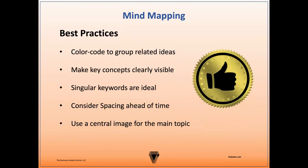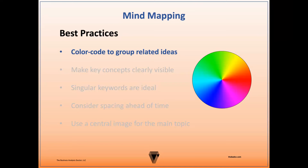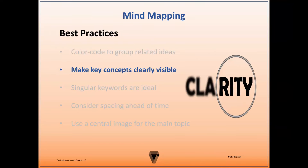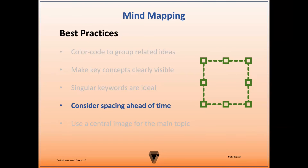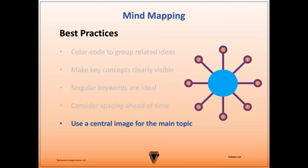Now let's look at the best practices of mind mapping. Color code the mind map to group related ideas. It's common for each topic that stems from the main topic to have a specific color, which will be assigned to all the subtopics and keywords derived from that topic. Make key concepts clearly visible — print all words clearly and use images that clearly represent the topics. Singular keywords are ideal; if a single keyword isn't practical, keep text short within your mind map. Also, put only one topic or subtopic on each branch or node. Consider spacing ahead of time — have enough space to extend your mind map and leave space for unexpected topics. Use a central image for the main topic; if an image isn't practical, the text for the main topic should be much larger than any other text in the mind map.